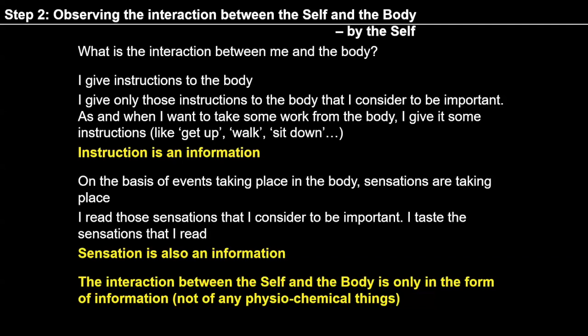No physiochemical things are being exchanged between me and the body. It is very important to note that when physical things come into touch of the body, some sensations take place. But I can read only the sensation — that is information. Similarly, I can instruct the body in the form of information. The objective of step 2 is to observe that interaction between the two is in the form of information only.